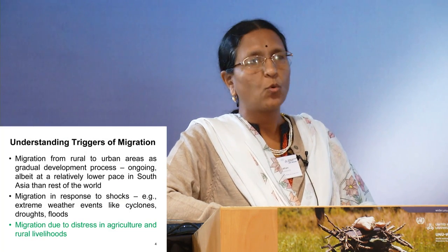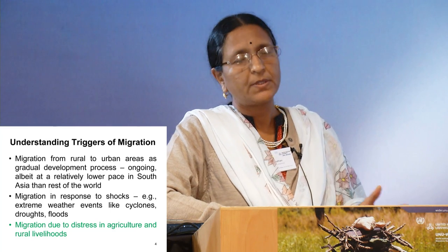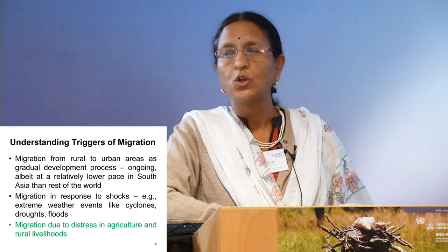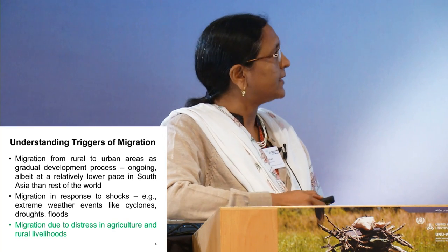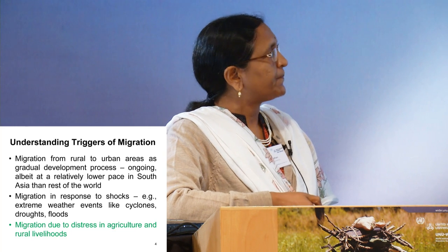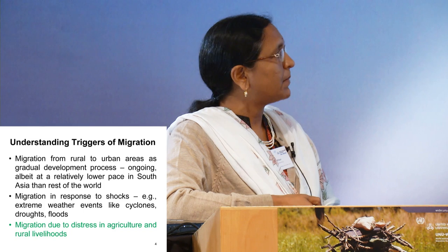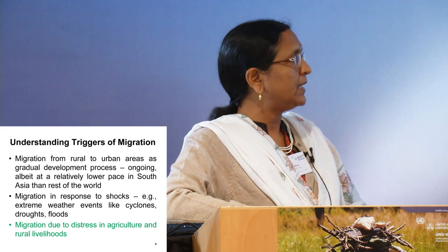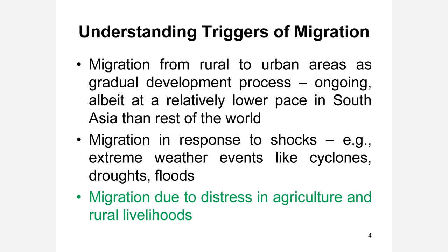There are several reasons why migration can happen. The most standard literature comes from the Lewis model or the Harris-Todaro model, where the process of urbanization brings a certain amount of migration. But the pace of migration is somewhat lower than expected for the kind of growth rates these regions are showing. There are also a lot more shocks that can happen through cyclones, droughts, and floods, which are exacerbated by climate change, and migration can be short-term or long-term. There is also increasing recognition of short-term migration in the Indian context due to distress in agriculture and rural livelihoods.